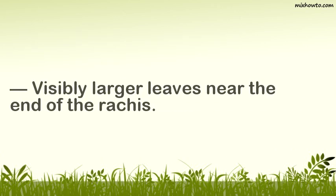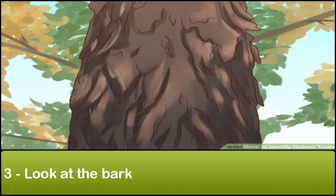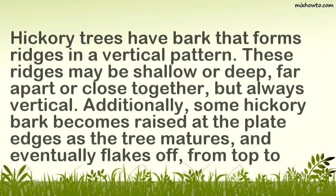Visibly larger leaves near the end of the rachis. Step 3: Look at the Bark. Hickory trees have bark that forms ridges in a vertical pattern. These ridges may be shallow or deep, far apart or close together, but always vertical. Additionally, some hickory bark becomes raised at the plate edges as the tree matures and eventually flakes off from top to bottom.